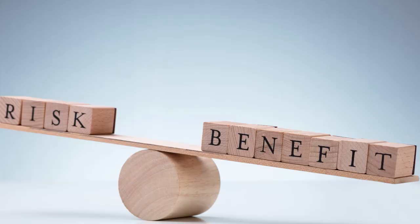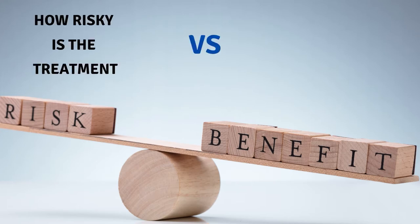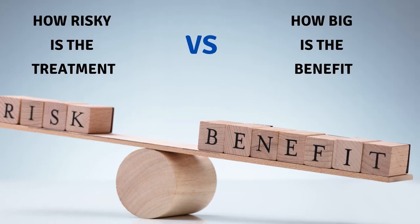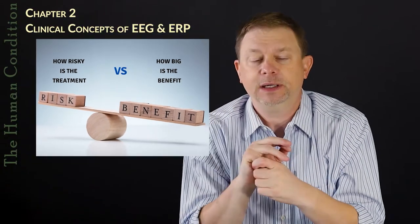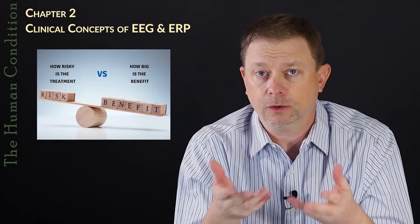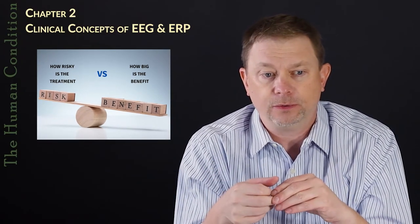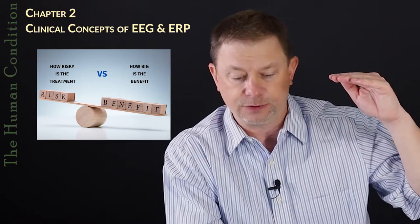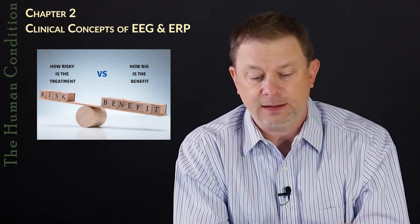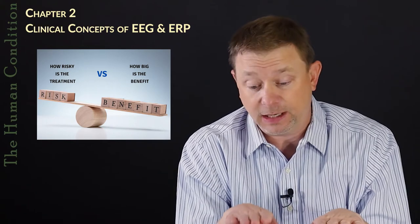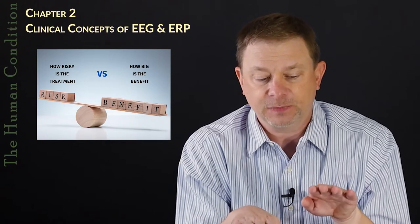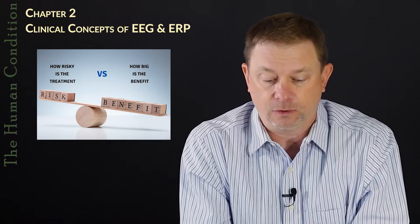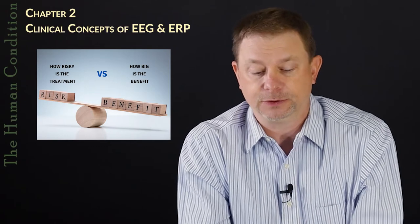That's called the risk-benefit ratio — how risky is the treatment versus how big is the benefit if it works. This risk-benefit ratio changes for functional and alternative medicine in that, as long as the disease isn't life-threatening or urgent or acute, the risk of the treatment is very, very low. The outcome or benefit may not be high, but the ratio of risk-to-benefit is much more favorable often in functional, complementary, and alternative medicine.